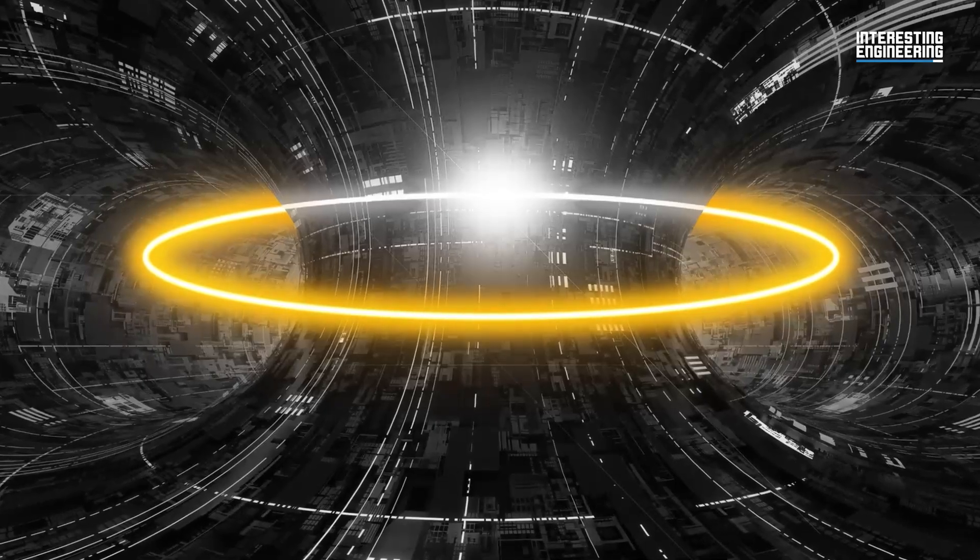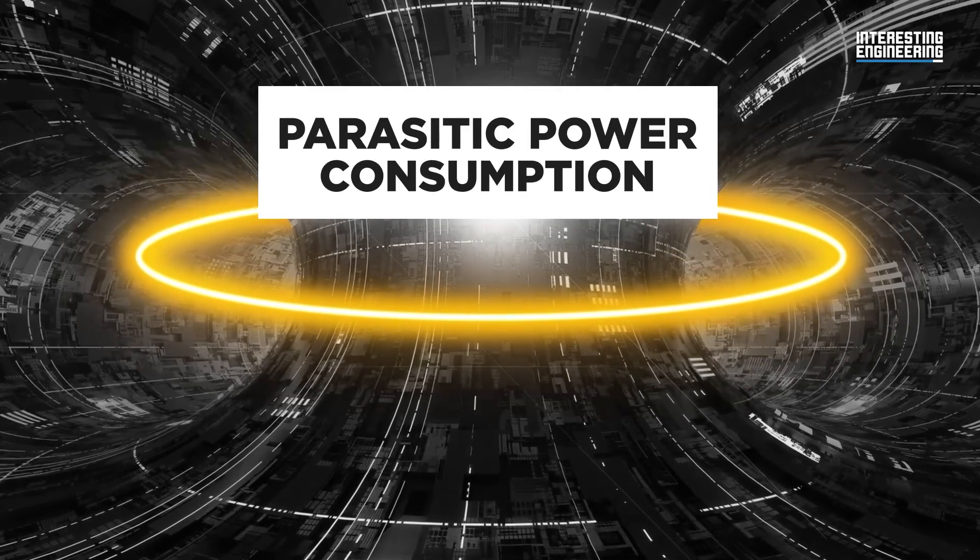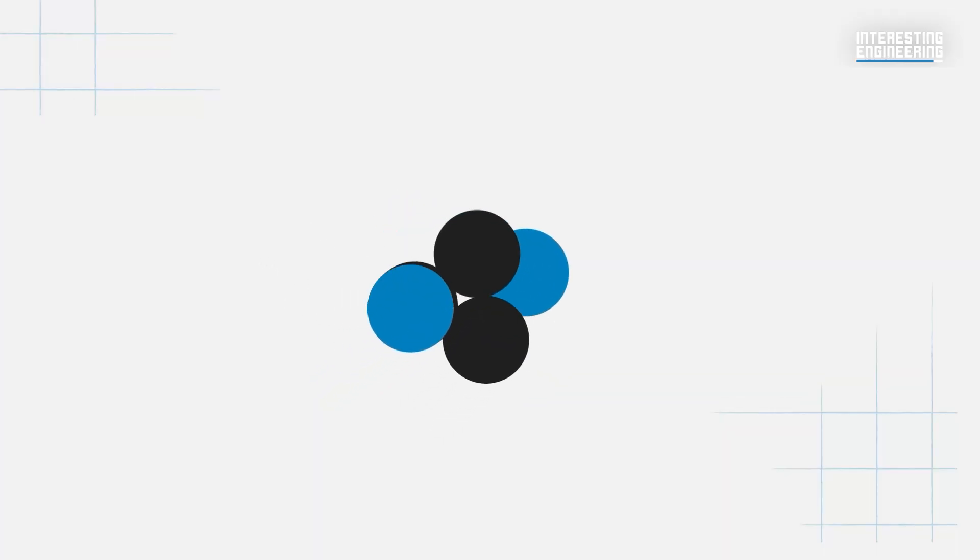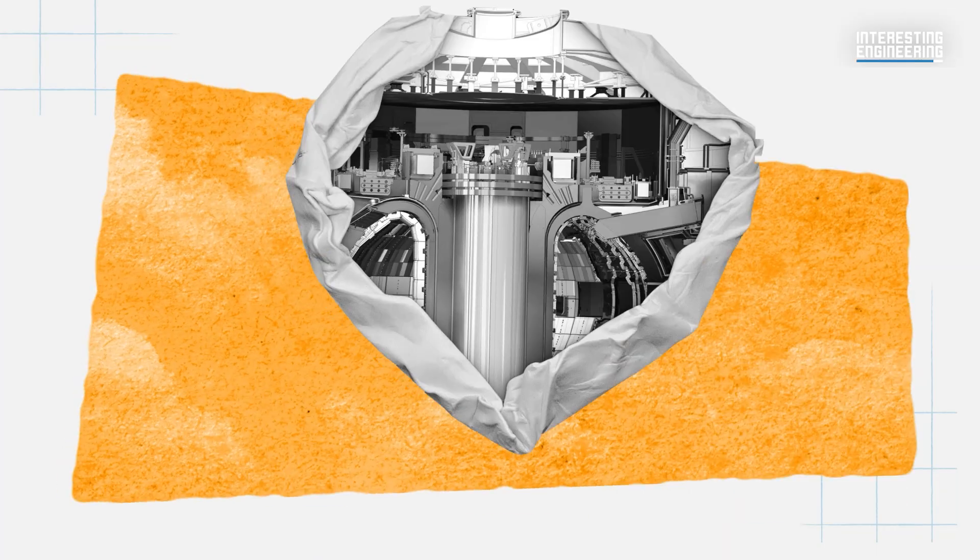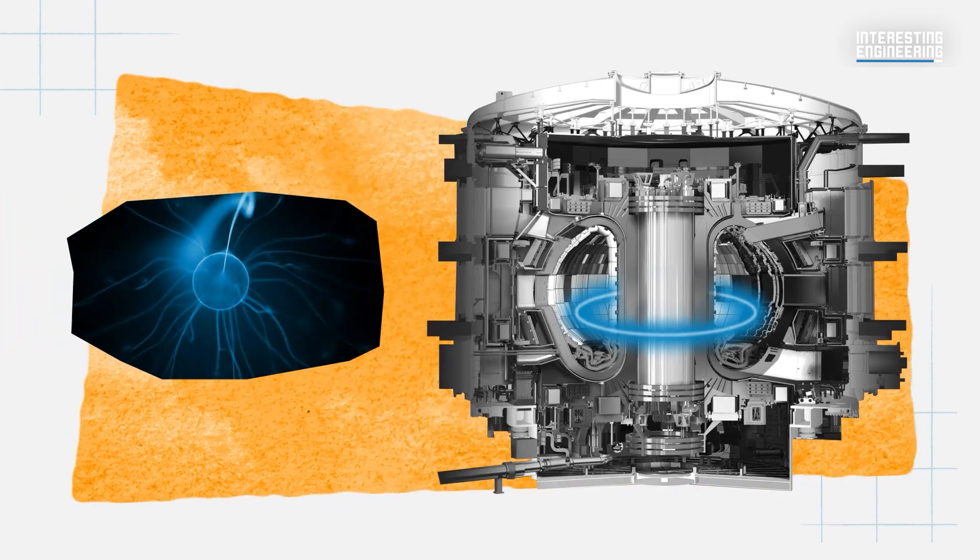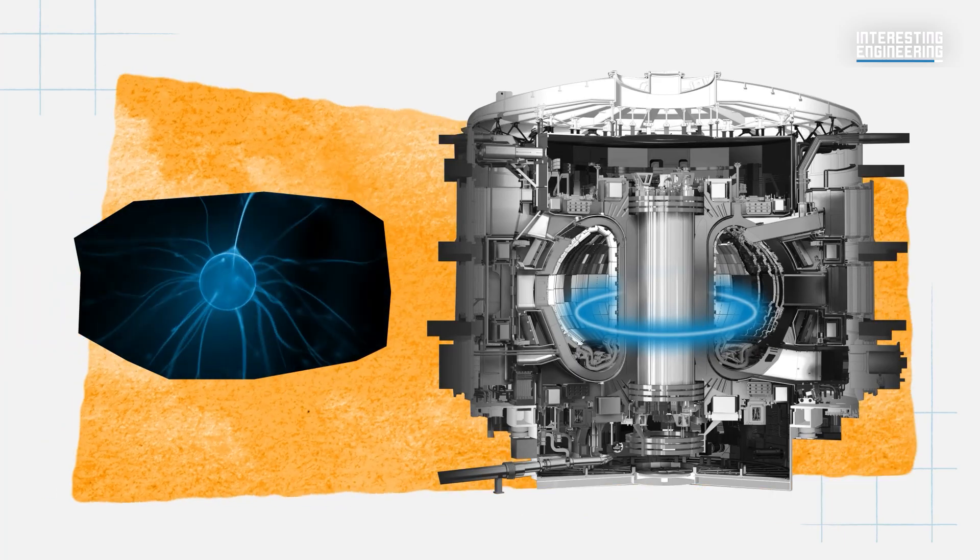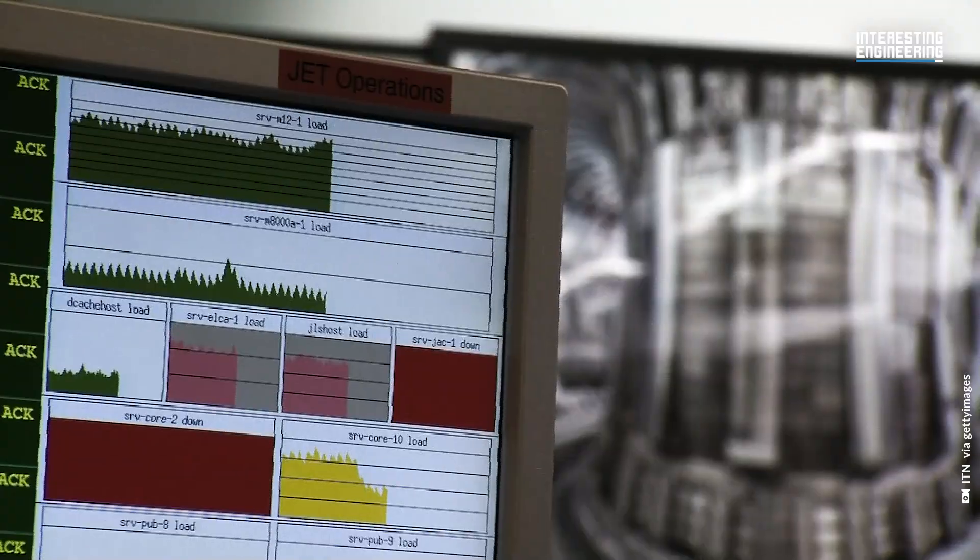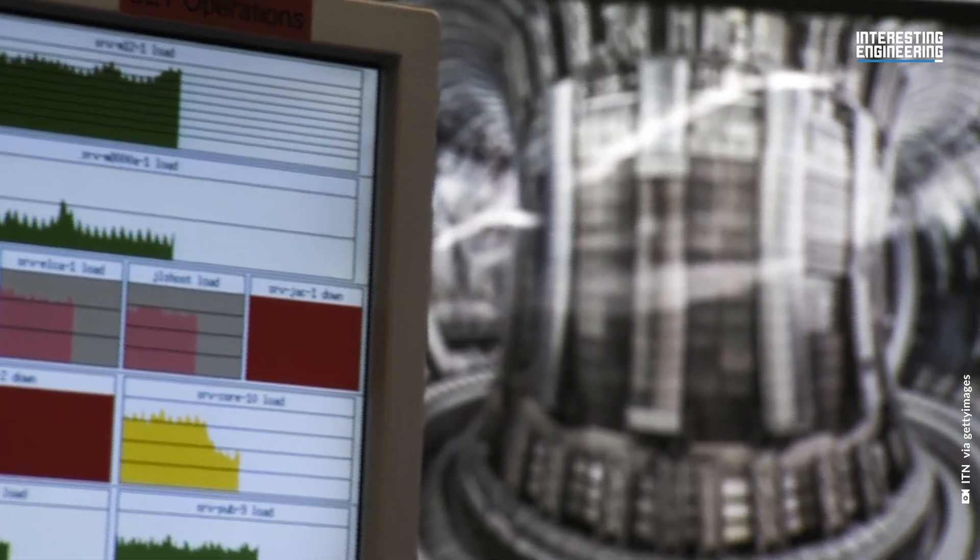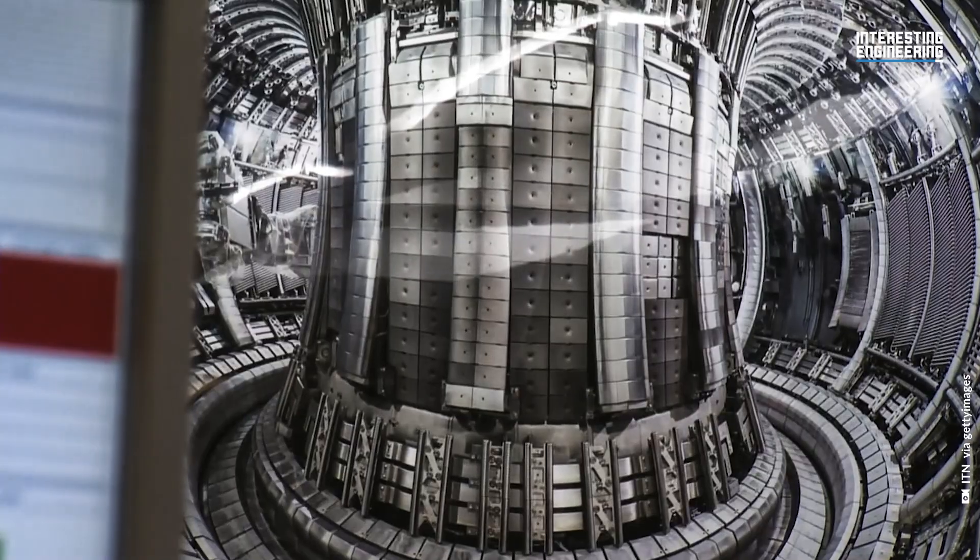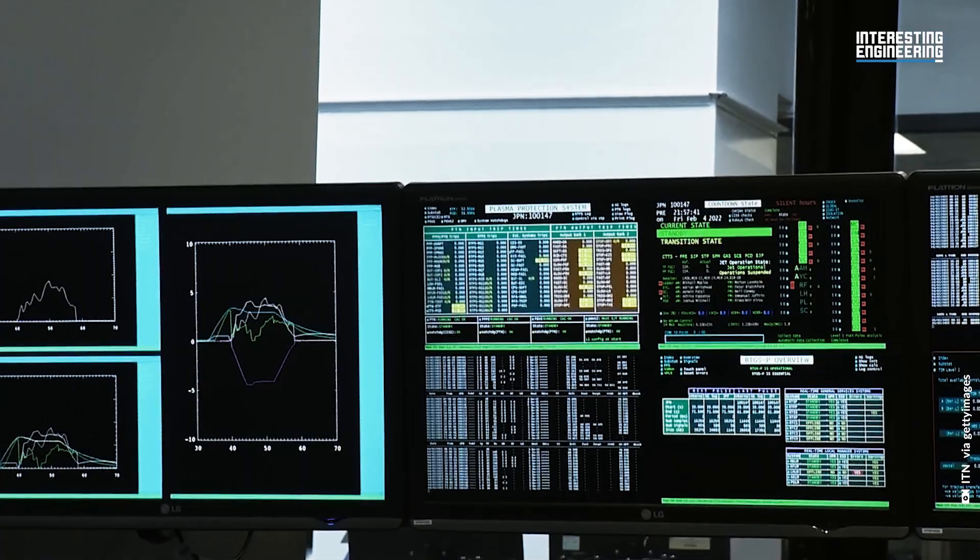Another downside of fusion reactors is parasitic power consumption. Since nuclear fusion can only occur at extremely high temperatures, a large part of the energy produced by a reactor will likely be used to keep the plasma at elevated temperatures for a longer duration. As fusion reactions begin to be sustained for longer durations, energy-intensive cooling mechanisms needed to protect equipment will also be run simultaneously, thereby increasing the power expenditure.